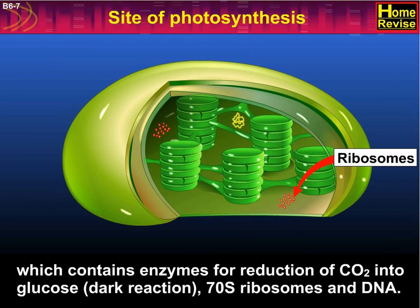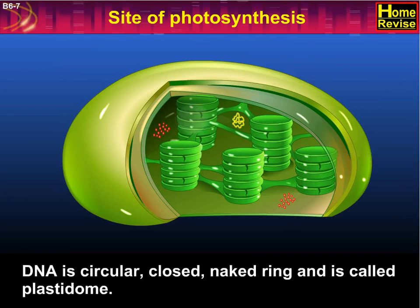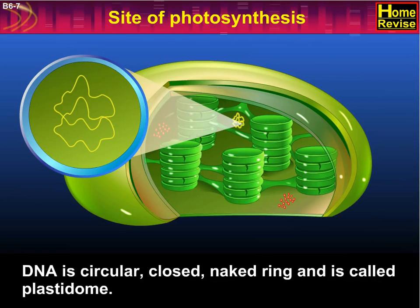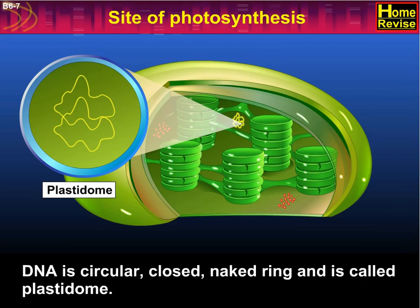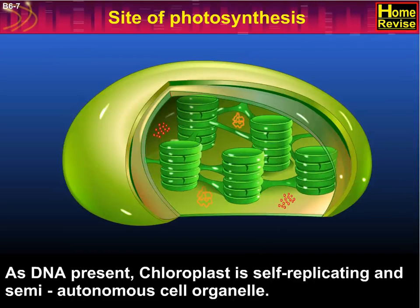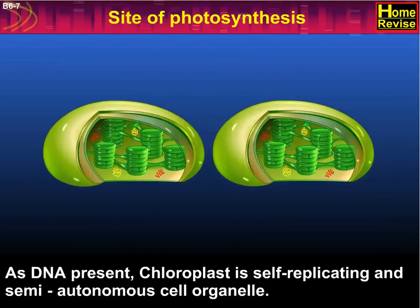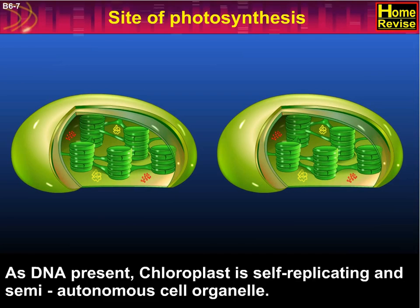70S ribosomes and DNA are also present in the stroma. The DNA is circular, closed, and naked ring, and is called plastidome. As DNA is present, the chloroplast is a self-replicating and semi-autonomous cell organelle.